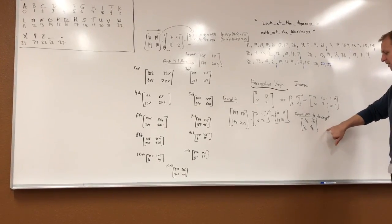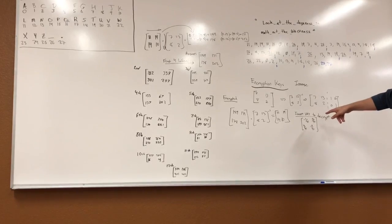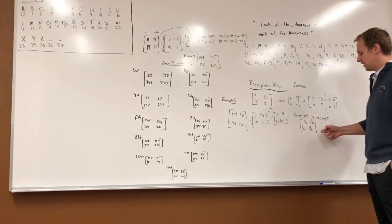And so when we worked it out, this is what we got: negative 1 over 45, 13 over 90, 4 over 45, and negative 7 over 90.